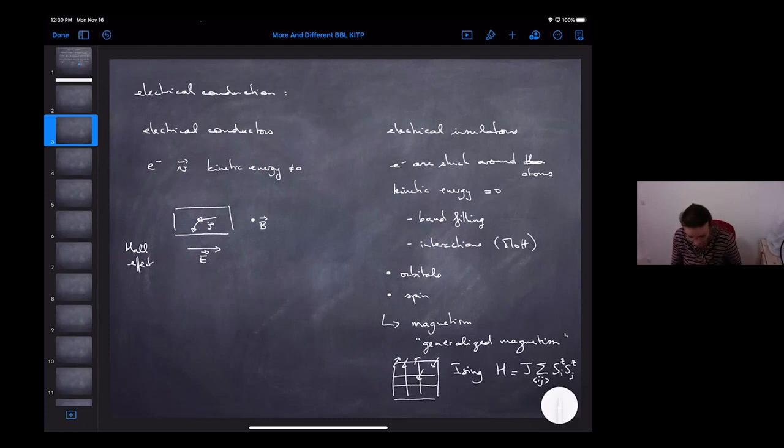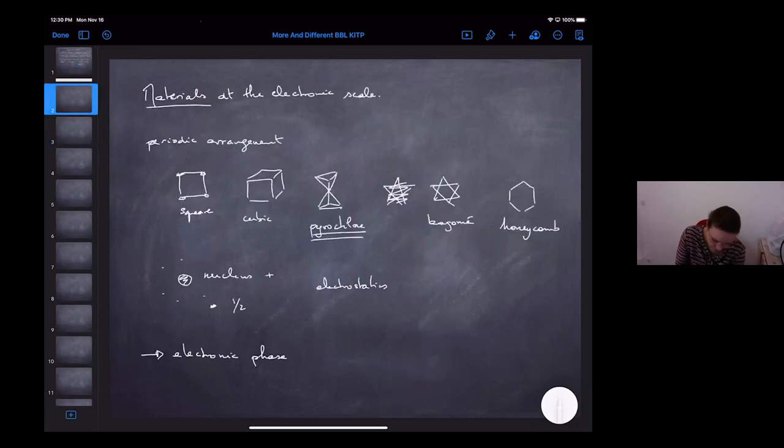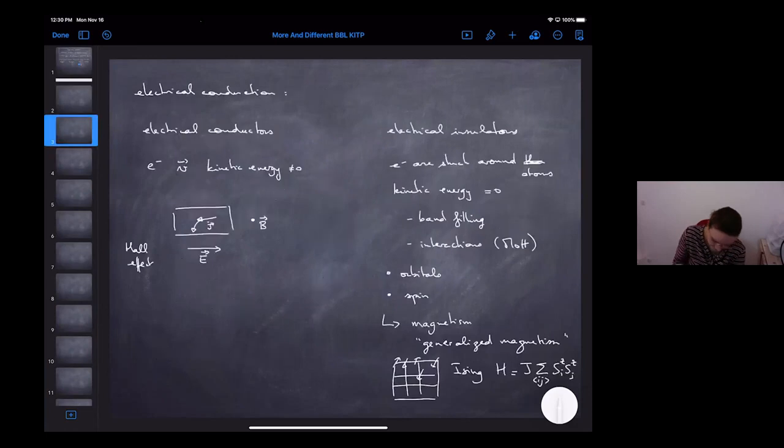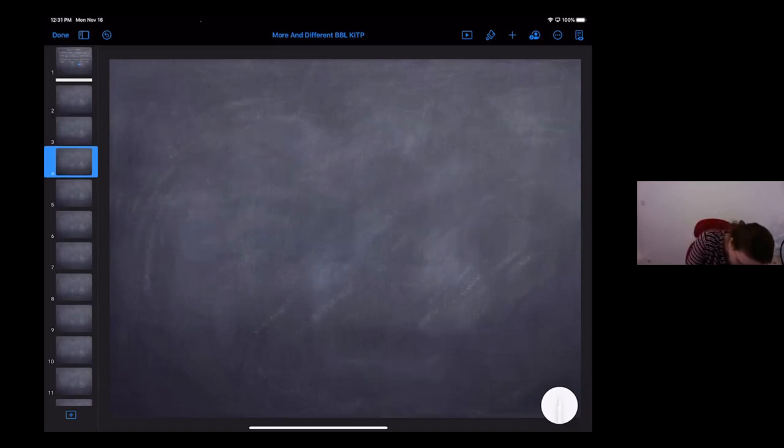You'd have on nearest neighbors, and then some local Z axis. They have some interactions of this form. This is already a very interesting model, especially when you start looking at it on the more frustrated lattices like I mentioned before, such as the pyrochlore or the Kagome lattice.